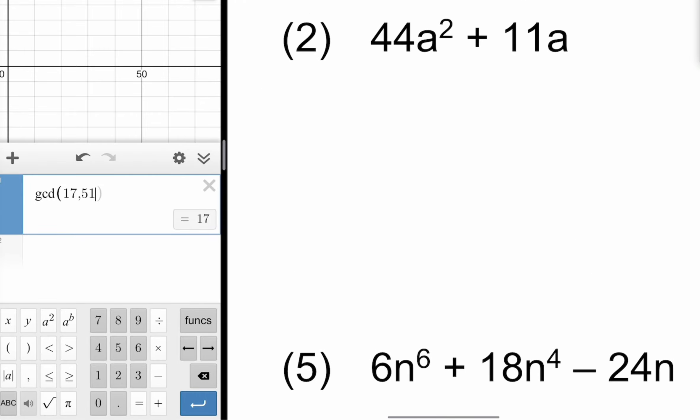Take a look at number two for example. We have 44a² and 11a. Our first job would be to figure out what the greatest common factor is for the numbers. Take care of the numbers first then go after the letters. If you have a variable that's just written all by its lonesome, you have to consider that as a variable raised to the first power.